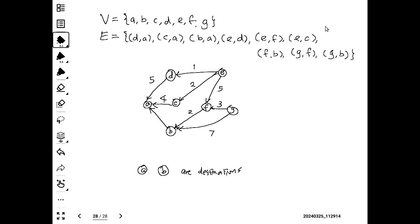Let me do some counting — one, two, three, four, five, six, seven, eight, nine. So there are nine edges, and there are nine entries in the set E (uppercase E), which is the symbol typically used to represent the set of edges.